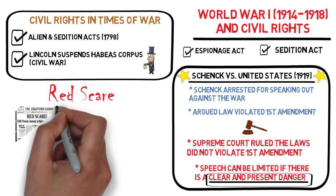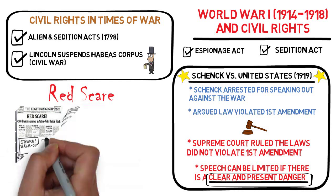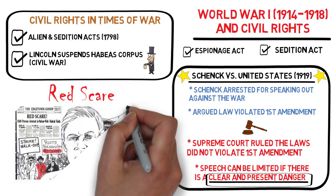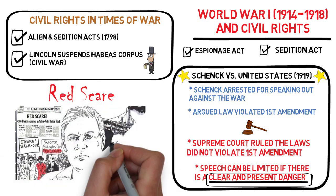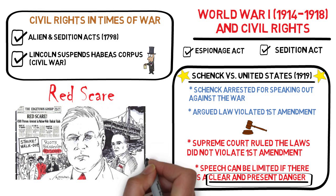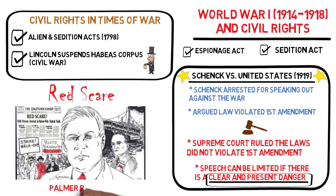Matters got worse when in 1919, a series of labor strikes and bombings gripped the country. One bomb exploded at the home of U.S. Attorney General A. Mitchell Palmer. Believing that the bombings were the work of political radicals, Palmer ordered the arrest of nearly 6,000 people suspected of radical political beliefs in what was known as the Palmer Raids. Many of those arrested were immigrants and many were deported.